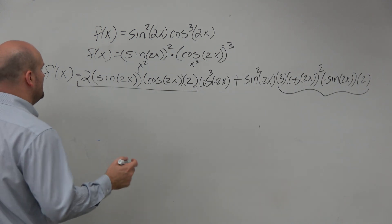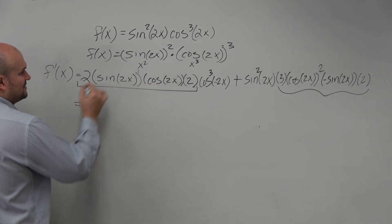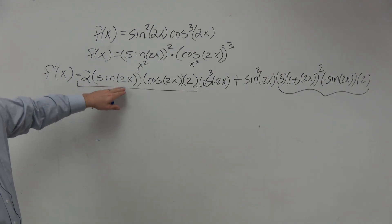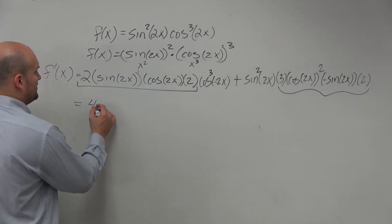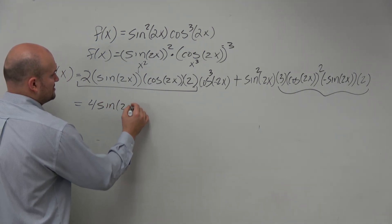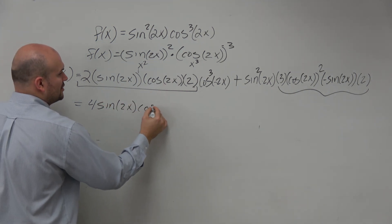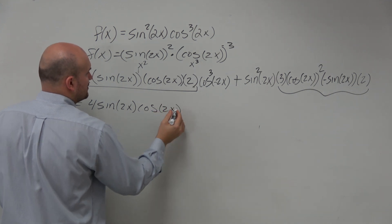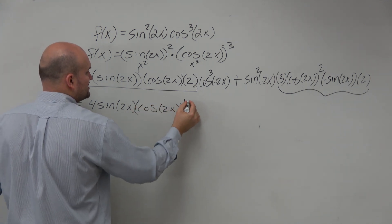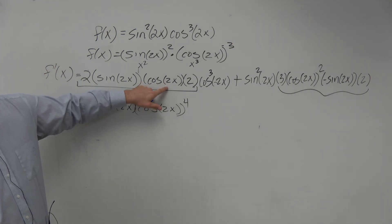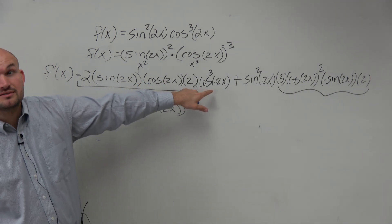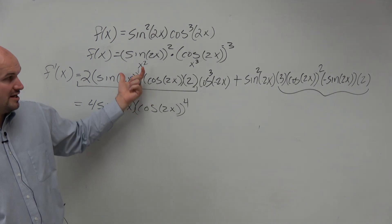All right. So let's factor the 2 times 2. We get 4. Let's see here. I have a cosine of 2x times a cosine cubed of 2x. So therefore, let's do sine of 2x. And then I can multiply that to give me cosine of 2x to the, let's put these parentheses, fourth power. Right? That's a cosine of 2x, that's a cosine cubed of 2x. Cubed times 1 would be cosine of 4x.